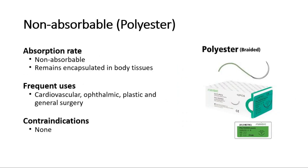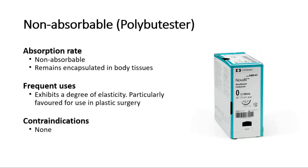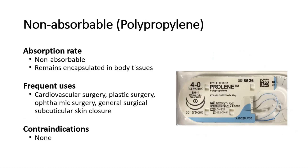Fifth is polyester, which is used for cardiovascular, ophthalmic, plastic, and general surgery. Polybutester is particularly favored for use in plastic surgery. Polypropylene is used in cardiovascular surgery, plastic surgery, ophthalmic surgery, and general surgical subcuticular skin closure.